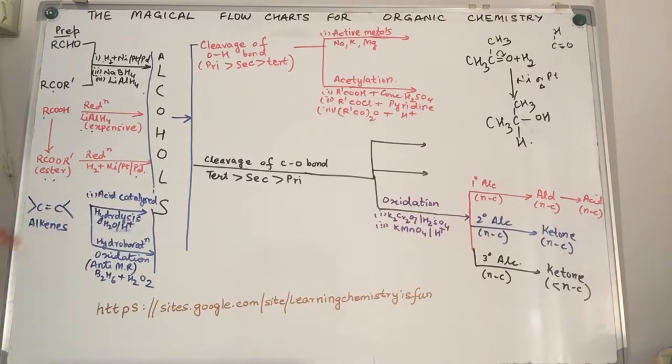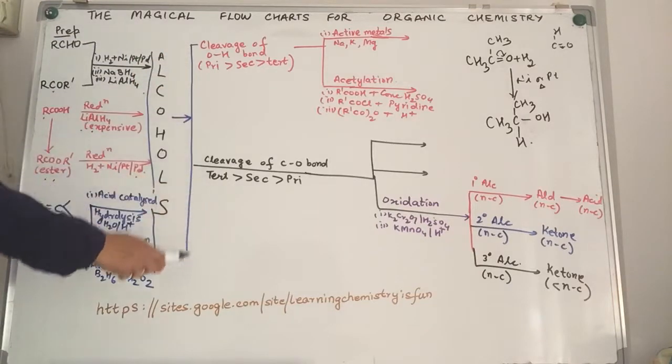Third example we have is alkenes. Alkenes can be converted to alcohols by two methods. One is acid-catalyzed hydrolysis, that means you add water in the presence of a mineral acid like dilute H2SO4. The second method is hydroboration oxidation. The first one is Markovnikov addition, the second one is anti-Markovnikov addition using diborane and hydrogen peroxide.